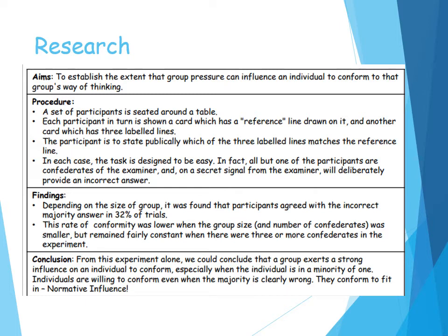This rate of conformity was much lower when the group size was smaller. We'll look into variables in more detail later, but it remained consistent when there were three or more confederates in the experiment. They concluded that group size does exert a strong influence on an individual's likelihood of conforming and complying to a group, especially when the individual is in the minority of one. Individuals are willing to conform to a majority even though they are clearly wrong — this is normative social influence.